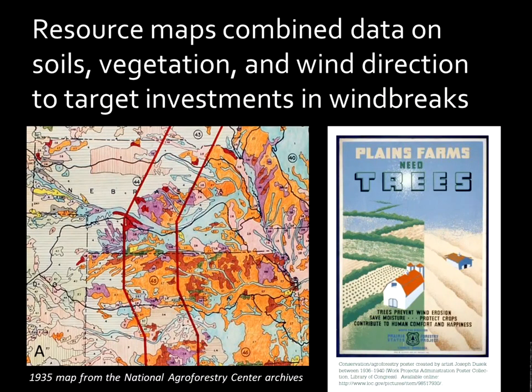They did a lot of work trying to understand how to prioritize where those windbreaks would go because there was a big investment involved. They took resource maps and combined data on things like soils, the existing vegetation in those areas, and wind direction, then layered that together to make a good assessment of where to focus those efforts. They also had propaganda materials to really encourage landowners to adopt windbreak practices.